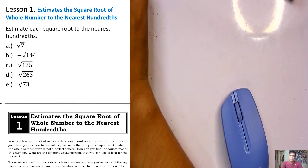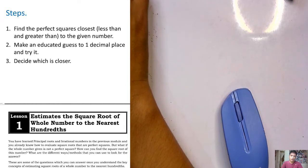From the word estimate, we are just going to identify the nearest value of a given number to the nearest hundreds. We are not going to identify the perfect value or the real value, just the estimated one. These are the steps to follow: find the perfect squares closest to that given number, make an educated guess to one decimal place and try it, then decide which is closer.